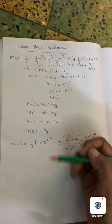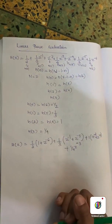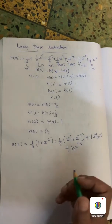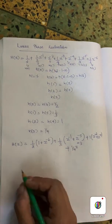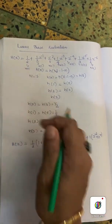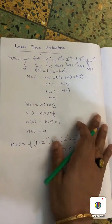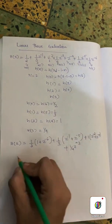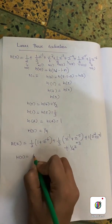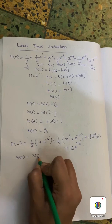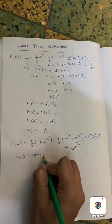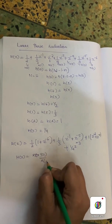Then we do a parallel arrangement. We work with H(z), where H(z) is equal to Y(z) divided by X(z). We use this transfer function to draw the realization structure.